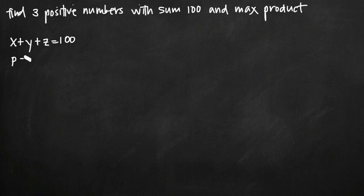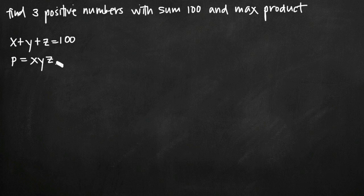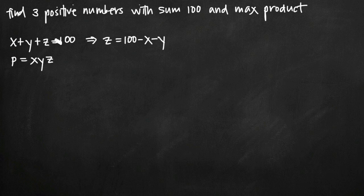So if we say the product is equal to x times y times z, where we're multiplying those three numbers together, this is the equation we're looking to maximize. Since we want to maximize this product equation, we need to reduce it to at most two variables. We'll do that by solving the constraint equation for one variable — solving x plus y plus z equals 100 for z gives us z equals 100 minus x minus y.